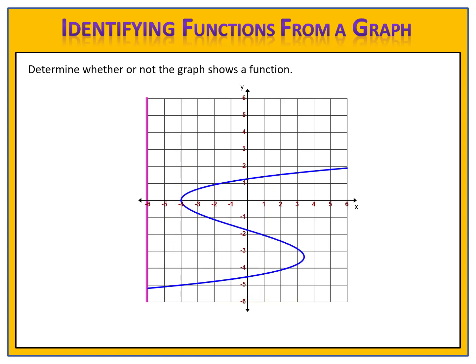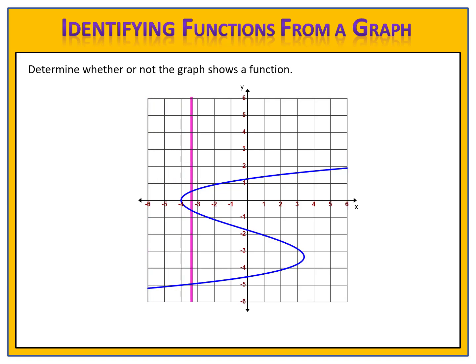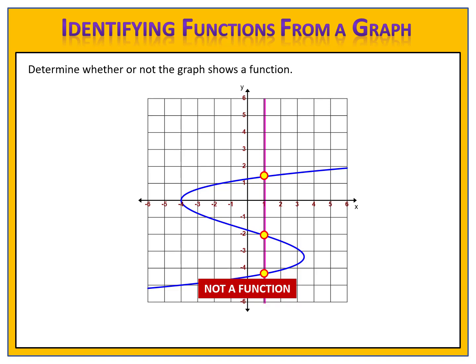Let's compare that with the next example. Here we have a graph, and we want to determine whether or not it is a function. Once again, we'll move our pink line across the graph. Notice that in some spots that line only touches the blue graph at one spot, but in other places it intersects two or three times. Take a look at this spot, for example, where the graph intersects three times. This graph fails the vertical line test — some inputs produce more than one output. The input 1, as we see here, produces three different outputs. This is not a function, because each input may produce exactly one output.